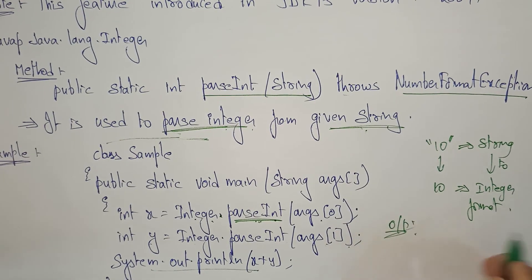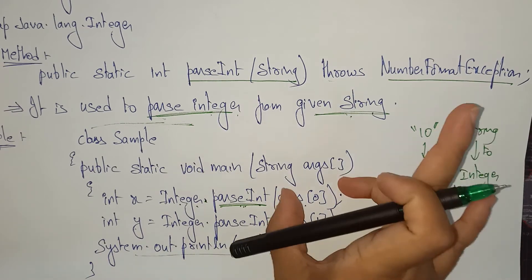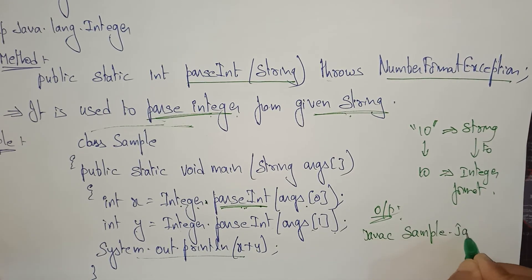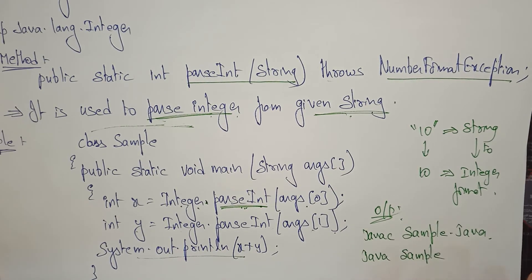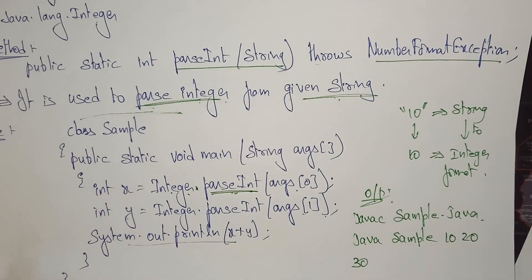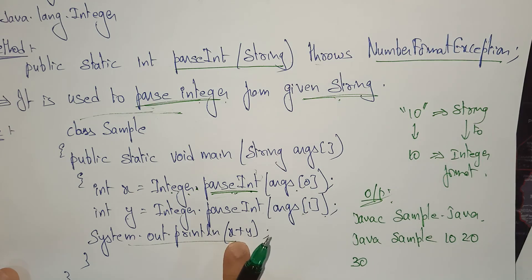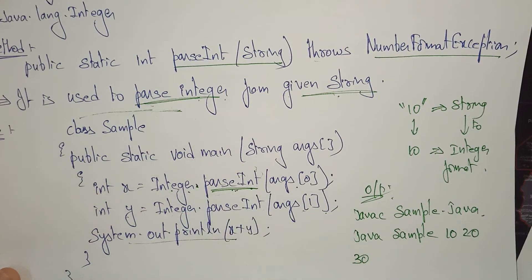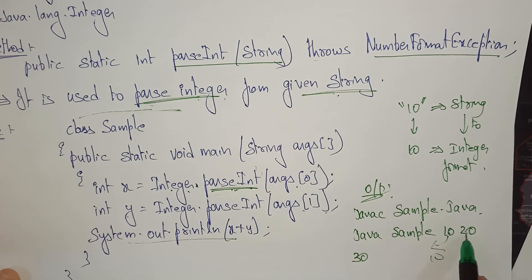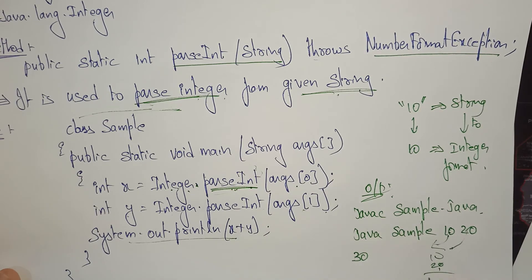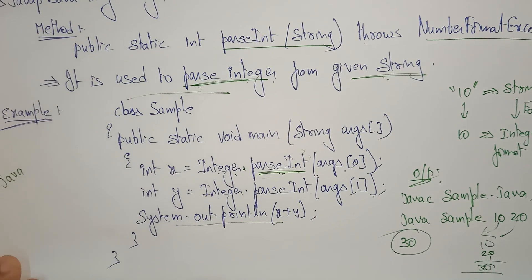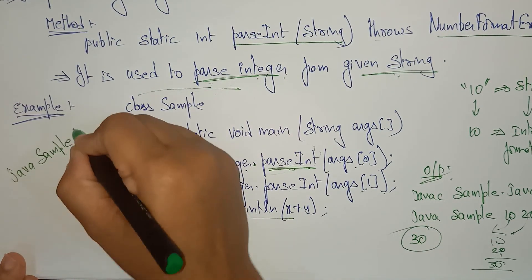At the command prompt, compile with: javac Sample.java, then run with: java Sample. Pass arguments at the command line — for example, java Sample 10 20 — the output is 30. Previously without parseInt, the two strings would have been concatenated, but now they are converted to integers 10 and 20, so the addition gives 30.